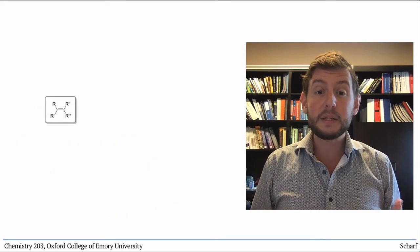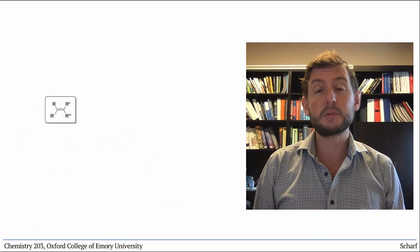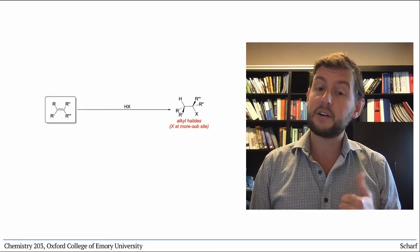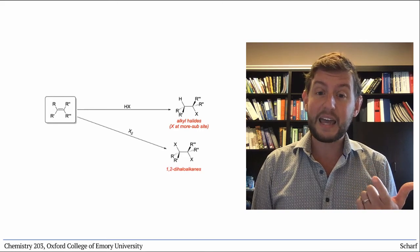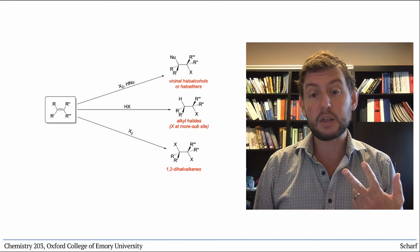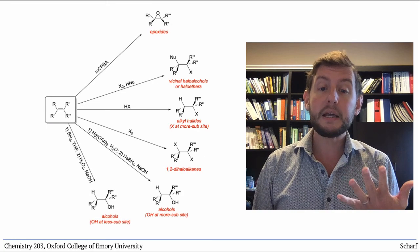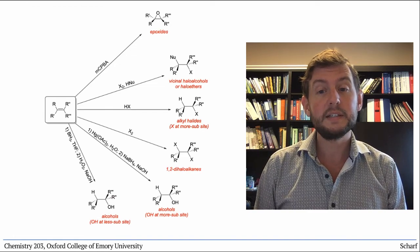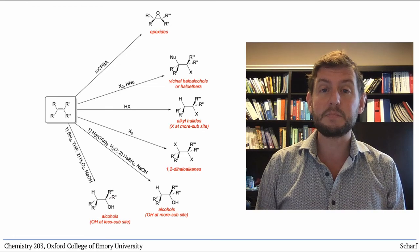This completes the reactions of alkenes that you'll be responsible for in CHEM 203. We've learned how to convert alkenes into alkyl halides, dihalides, vicinal halo alcohols or haloethers, epoxides, and alcohols, both with the OH group at the more substituted carbon and with the OH at the less substituted carbon.